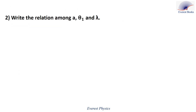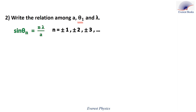Number two: write the relation among A, theta 1, and lambda. From the given formula, sine theta n equals n lambda over A, where n is a non-zero integer. Now theta 1 is the angle of diffraction at the center of a dark fringe, so let's replace n by 1. We get sine theta 1 equals lambda over A. Since theta 1 is a small angle, we replace sine theta 1 by theta 1, giving theta 1 equals lambda over A.